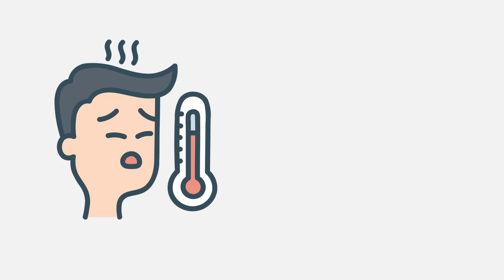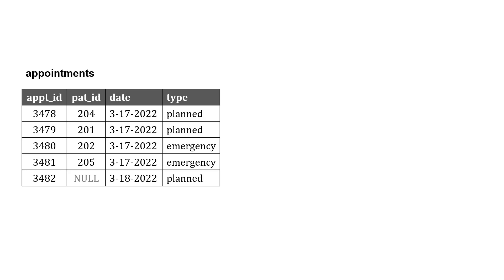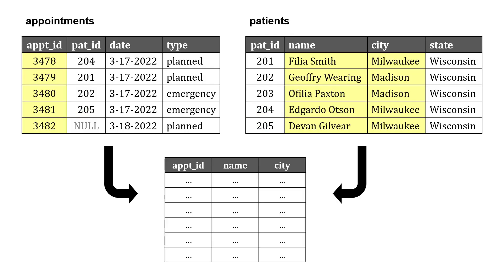Let's look at these joins in more detail using an example. We work at a doctor's office and track patients and their appointments. We have an appointments table with an appointment ID as the primary key, a patient ID, the date, and the type — whether it was planned or an emergency. We also have a patients table where patient ID is the primary key, along with name, city, and state. The relationship between them is the patient ID — the primary key in patients and the foreign key in appointments. We want to join this data to get appointment ID, name, and city.